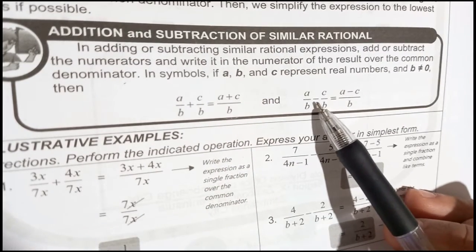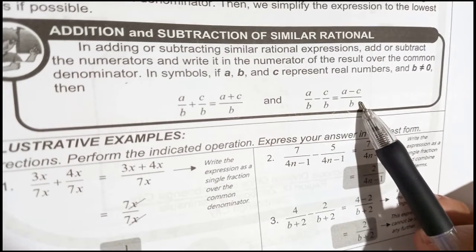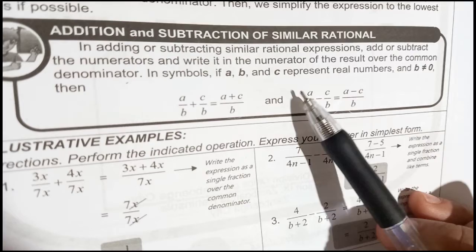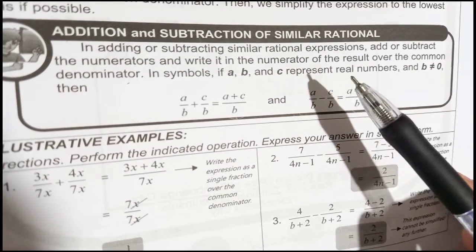The same thing with subtraction. The common denominator is B. So copy B. Simply subtract the numerators, A minus C. The result will be A minus C over B. So to understand deeply about this, let's do examples.